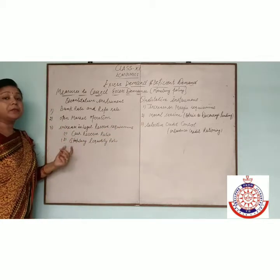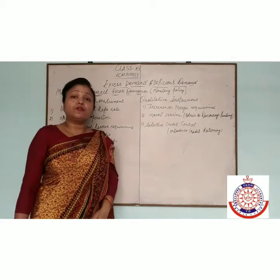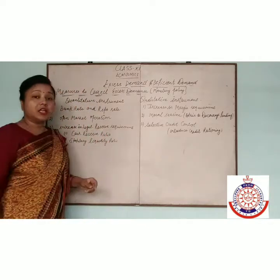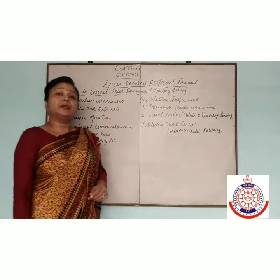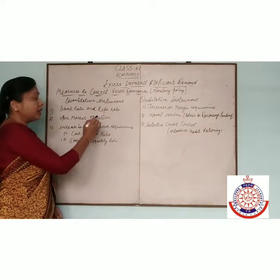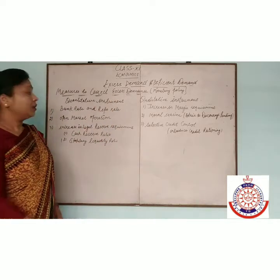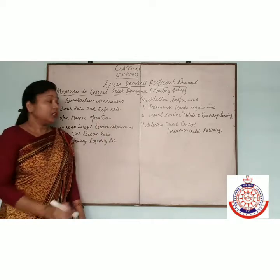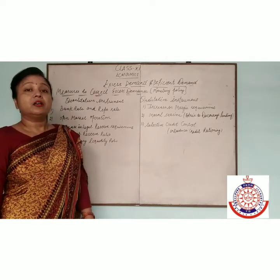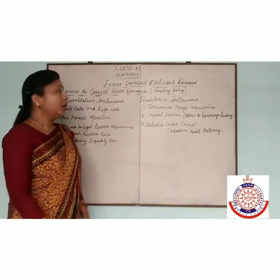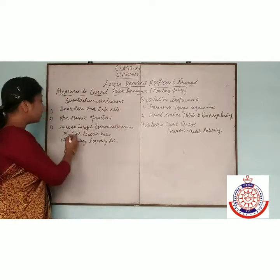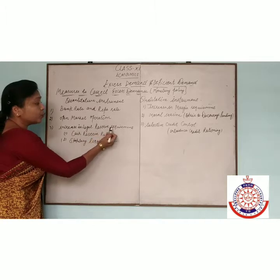Second is open market operation. Open market operation means sale and purchase of government securities by RBI. In case of excess demand, RBI offers to the commercial bank for sale. RBI sells the government security so that money supply reduces in the economy and the problem of excess demand will be removed.